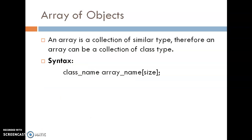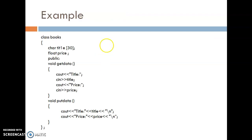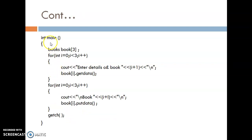Array of Objects. We can create an array of objects like: class name, space, array name, and size inside brackets. With the same class, we can create multiple objects with the same name. For example, class book has get data and put data functions. Inside void main, book three creates an array of class book objects. To call get data and put data for this array, we use a for loop starting from 0 to 3, calling get data three times and put data three times.